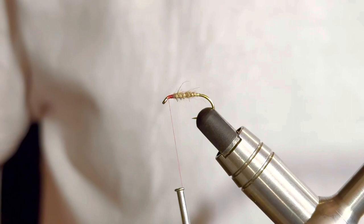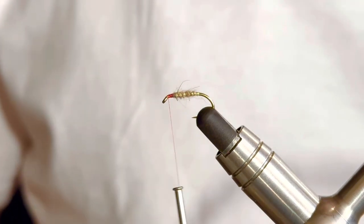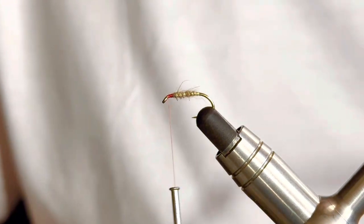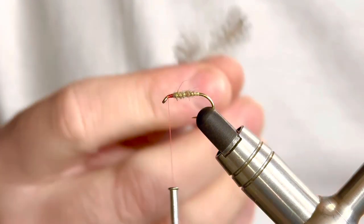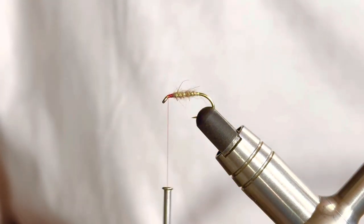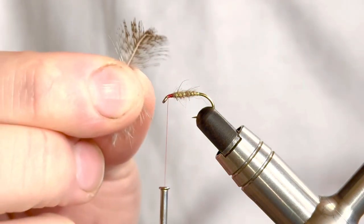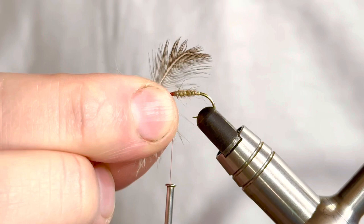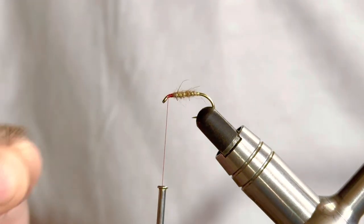Now we're ready to add our hackle. Like I say, it is a partridge. I've gone for a partridge that's got a few brown speckles to it. When you select the feather, if you offer up the fibers, you want them to be coming just to the back of that body, which that is.